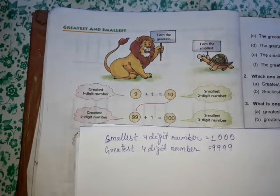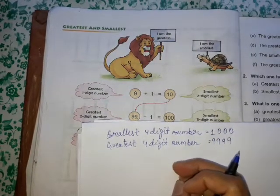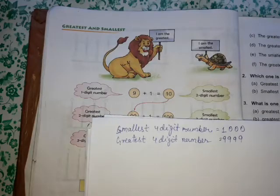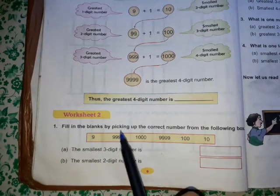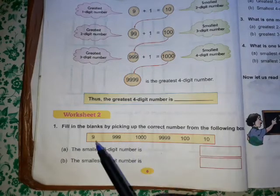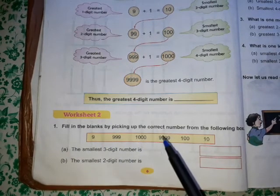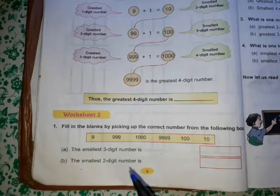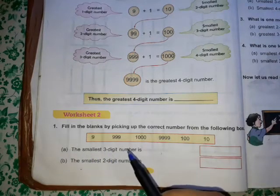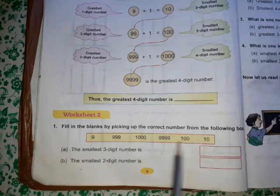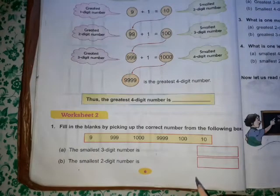Now we will revise how to solve worksheet 2. Fill in the blanks by picking the correct numbers from the help box. Numbers given in the box are: 9, 999, 1000, 9999, 100, and 10. First question asks: the smallest three digit number. The smallest three digit number is 100, so we write 100.